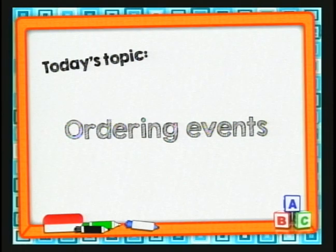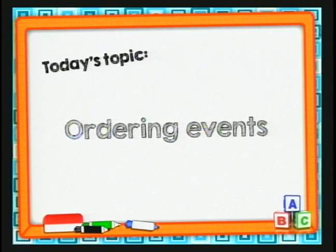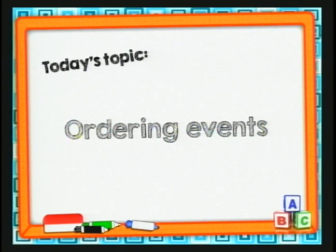Vamos a ver un poquito sobre ordering events — que dice ordenar eventos. ¿Cómo se ordenan eventos? Es decir, ¿cómo digo: primero hago esto, luego hago este otro, luego esto y finalmente hago esto? Vamos a ver unas palabritas que nos van a ayudar mucho. Estas son las primeras.